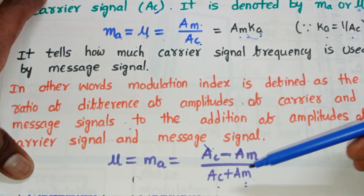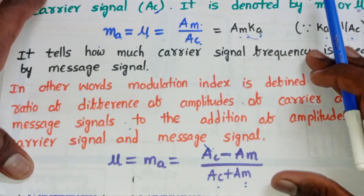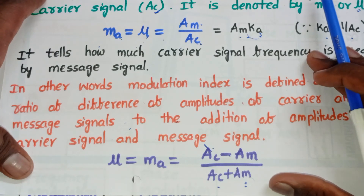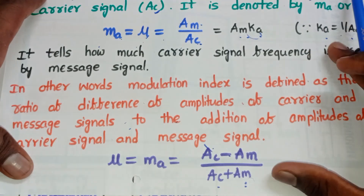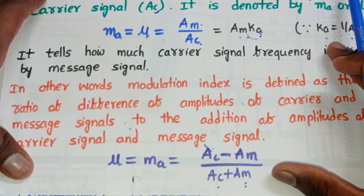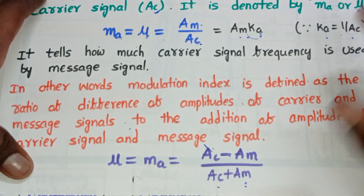To summarize, ma = mu = Am / Ac is also a correct representation. These are the definitions and a clear explanation of the modulation index. Thank you for watching this video.